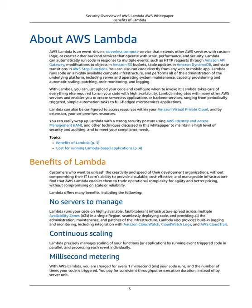Lambda also provides built-in logging and monitoring, including integration with Amazon CloudWatch, CloudWatch Logs, and AWS CloudTrail. Continuous Scaling: Lambda precisely manages scaling of your functions or application by running event-triggered code in parallel and processing each event individually. Millisecond metering: with AWS Lambda, you are charged for every 1 millisecond your code runs and the number of times your code is triggered. You pay for consistent throughput or execution duration instead of by server unit.